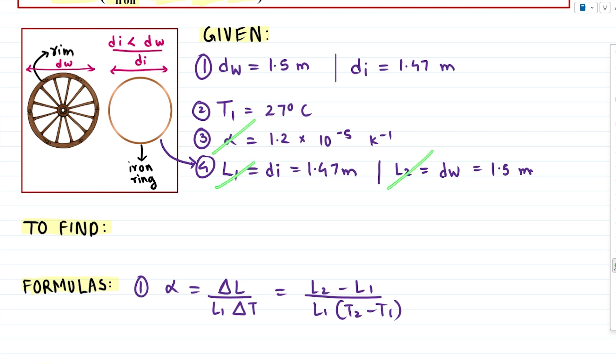So now when we have L1, L2, alpha, T1, this formula is pretty straightforward for us. And then our next section, we have to find the temperature till which we should heat our iron ring. And for this context we call it T2, our final temperature. That's unknown to us.